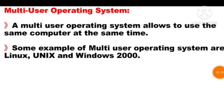Multi-user operating system: a multi-user operating system allows multiple users to use the same computer at the same time. Some examples of multi-user operating system are Linux, Unix, and Windows 2000.